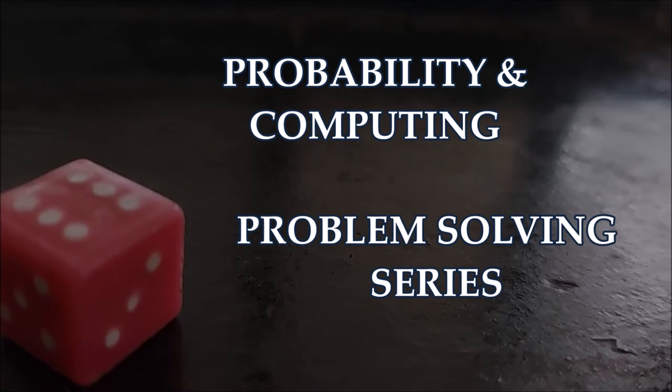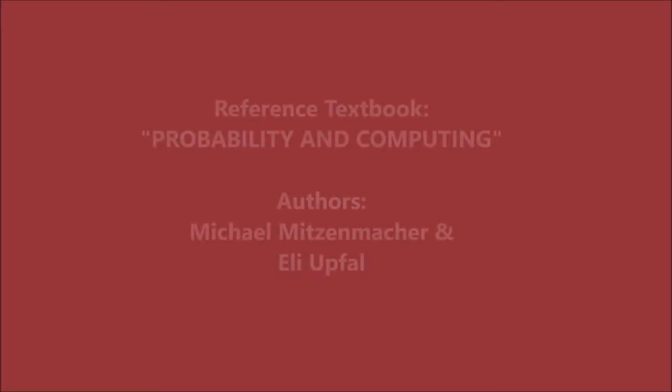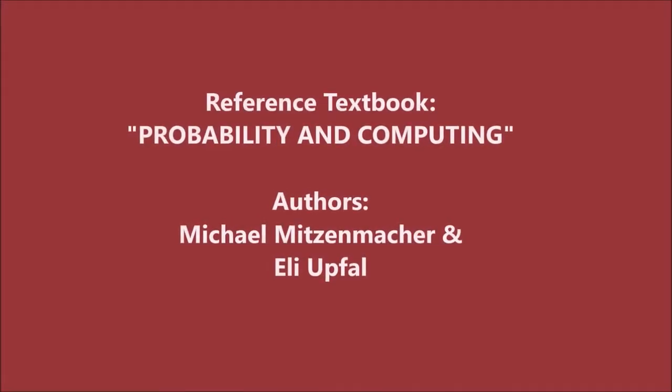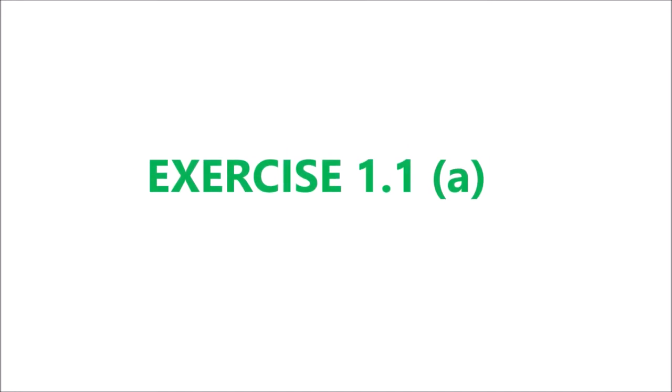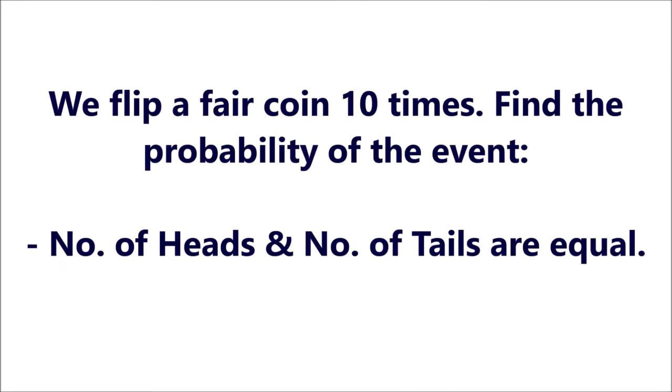Hello and welcome to the Probability and Computing problem-solving series. Today we will be solving exercise 1.1a. We flip a fair coin 10 times and find the probability of the event that the number of heads and number of tails are equal.